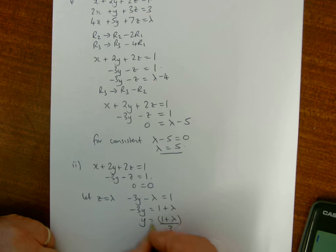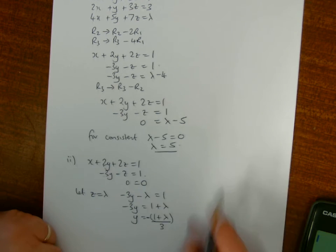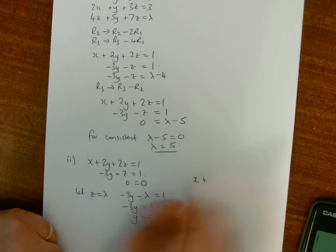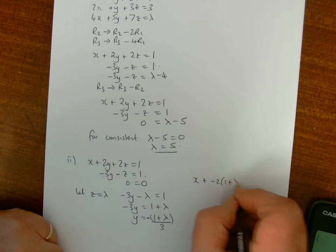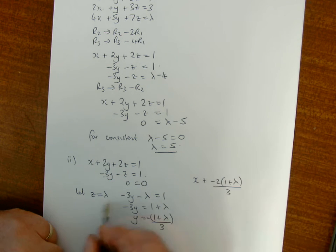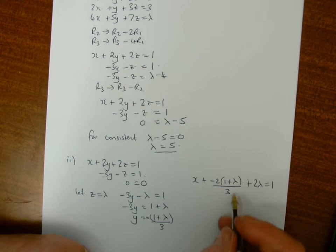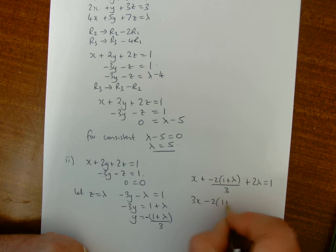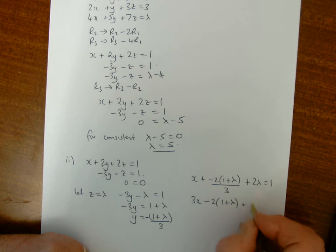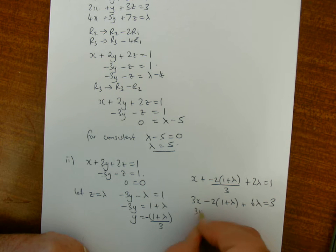To find x, go back into the first row. So I'll have x plus 2y, that's minus 2 lots of (1 plus lambda) over 3, plus 2z equals 1. To get rid of the fraction, multiply every term by 3, so that's 3x minus 2 times (1 plus lambda) plus 6 lambda equals 3. Expand the bracket and get 3x on its own. Take minus 2 over, so that will be 5 plus 4, that's minus 4 lambda.